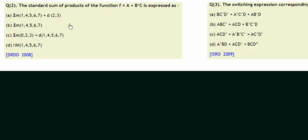The standard sum of product of the function f equals A plus B complement C is expressed as. If you want to solve it by yourself you can pause the video and try it. Till then I will solve it. So let's see how we can do this. There are so many ways we can do it but as there is a don't care also involved, I have to make a K-map. You can also do it by the truth table but I will make a K-map.